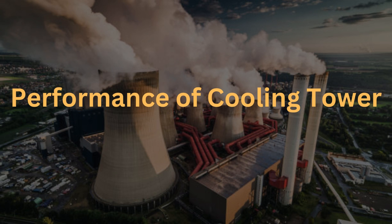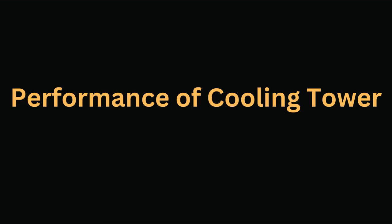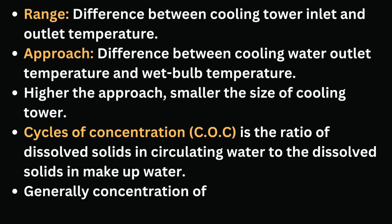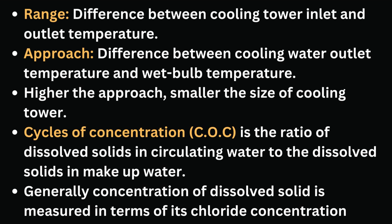The next and most important topic is performance of cooling tower. Three terminology need to be understood: range, approach, and cycles of concentration (CoC). Range is the difference between cooling tower inlet and outlet temperature. Approach is the difference between cooling water outlet temperature and wet bulb temperature — the higher the approach, the smaller the size of the cooling tower. CoC is the ratio of dissolved solids in circulating water to dissolved solids in makeup water, generally measured in terms of chloride concentration.